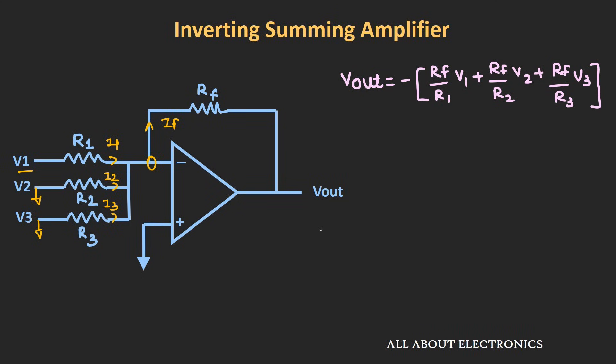The output of the inverting summing amplifier is a negative voltage. If a positive output is required, we can connect an additional inverting op-amp with unity gain at the output. This extra stage inverts the sign, giving a positive output voltage. That covers everything about the inverting summing amplifier.